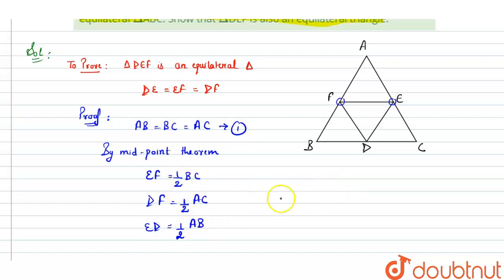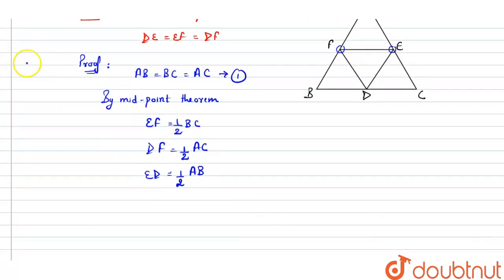Right. Now, as by equation one, AB equals BC equals AC, it implies half of AB equals half of BC equals half of AC.